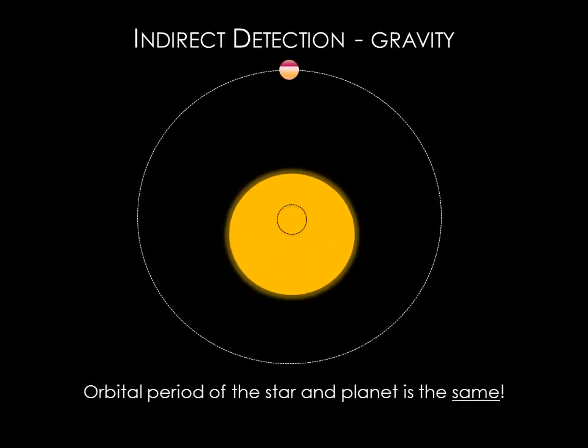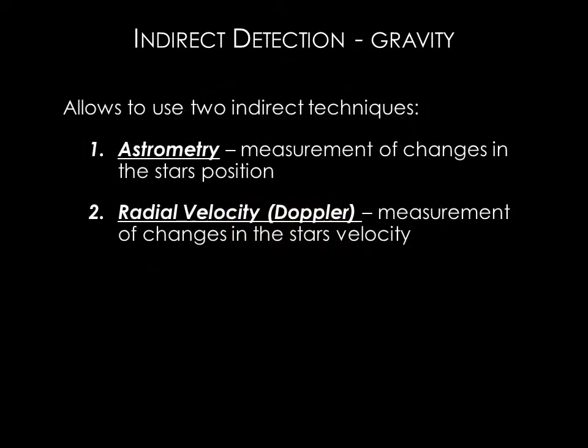The idea that objects orbit their common center of mass holds even for the Sun and the planets. Consider a star and a single planet: the star is still orbiting around the planet, even if the center of mass is inside of it, and the planet is still orbiting around the star. The orbital period of the star is therefore the same as that of the planet. To find planets around other stars, we need to look for the motion of the star caused by the gravitational tug of its planets. We can look for this motion by making precise measurements of the star's position in the sky — this is called astrometry — or by measuring changes in a star's velocity using the radial velocity or Doppler method.